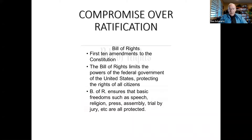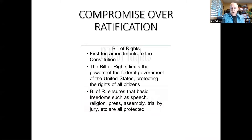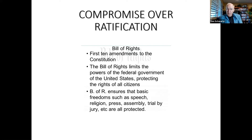It was agreed that a Bill of Rights would be added to the Constitution. The first 10 amendments consist of the Bill of Rights, which limits the power of the federal government and protects the rights of citizens. This was the very thing that the anti-Federalists were concerned about. The Bill of Rights does not talk about the power given to the government; rather, it enumerates the rights that government cannot take away from the people.